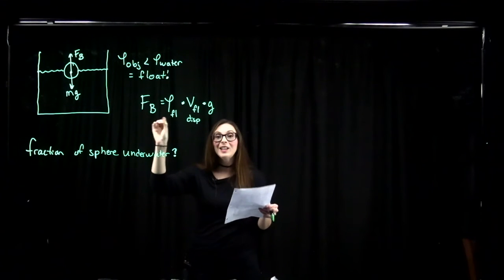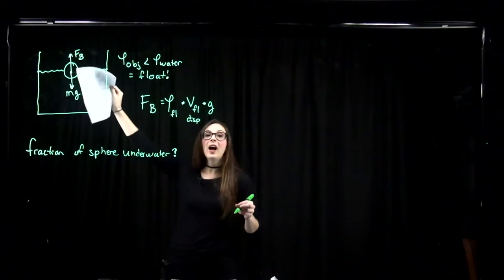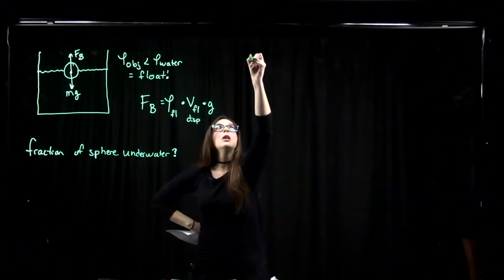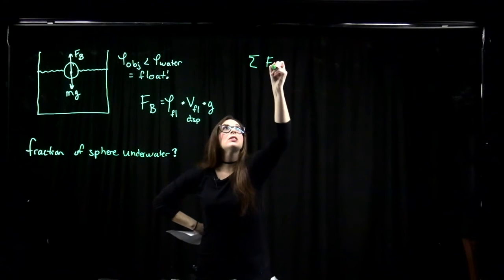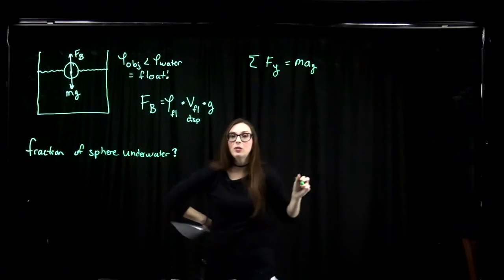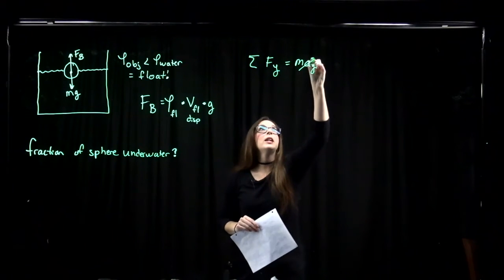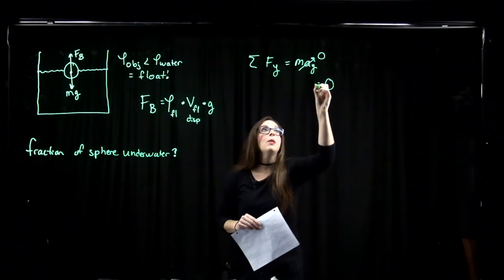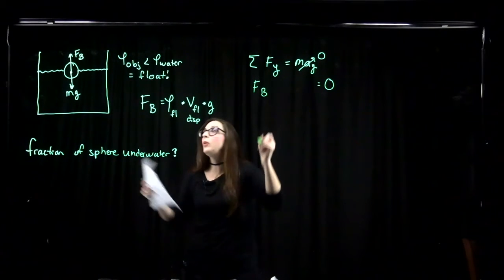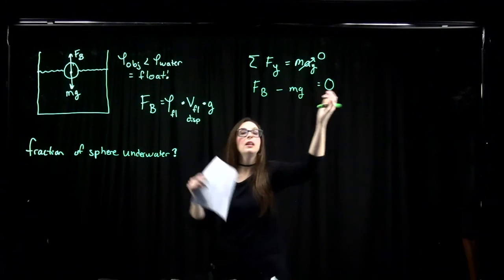To find the fraction of our sphere that's underwater, we're going to use Newton's second law applied to this floating body. The sum of all forces in the y-direction equals mass times acceleration in the y-direction. Since we're floating and not accelerating up or down, acceleration is zero. So we have the buoyant force upward, Fb, and weight downward: Fb minus mg equals zero.